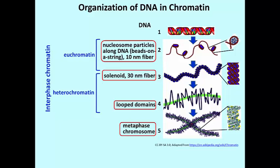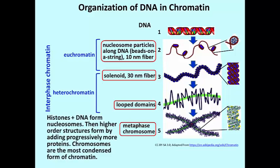So there's our metaphase chromosome. As I said, you get these higher-order structures because more proteins cause more coiling into even more compact shapes.